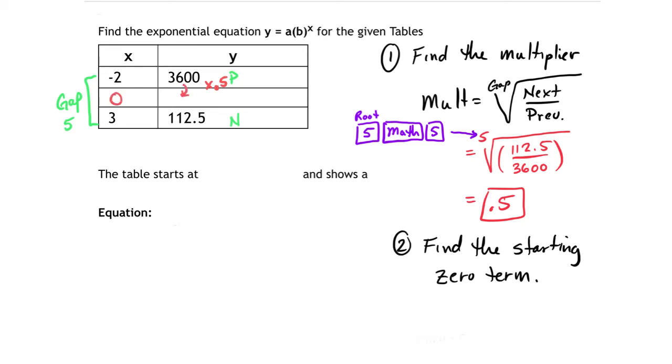Now our goal is to try to find the zero term. Now if you're going to multiply by 0.5 two times to get from the negative two term over to the zero term, then you have to multiply by 0.5 to the second power, because you're going to do it two times in a row.